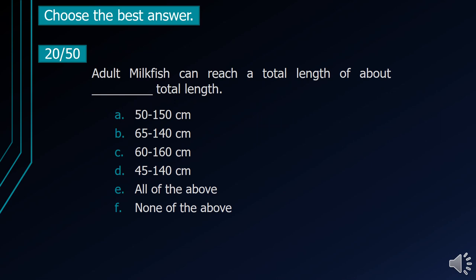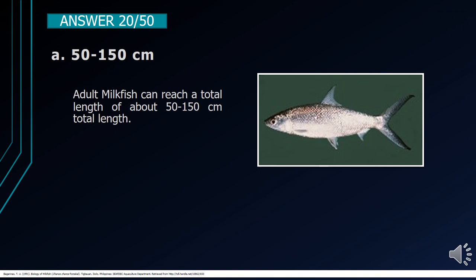Number 20. Adult milkfish can reach a total length of about blank. A. 50–150 cm. B. 65–140 cm. C. 60–160 cm. D. 45–140 cm. E. All of the above. F. None of the above. The correct answer is letter A, 50–150 cm. Adult milkfish can reach a total length of about 50–150 cm.